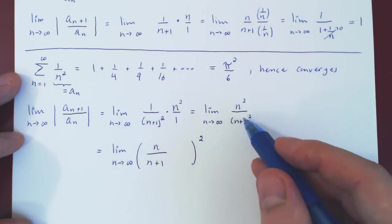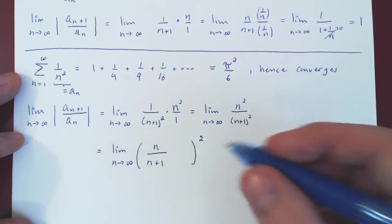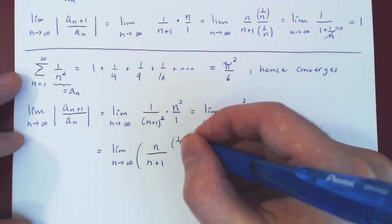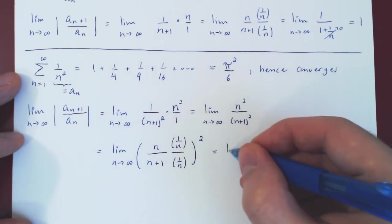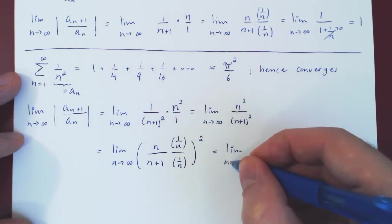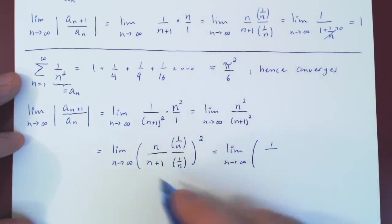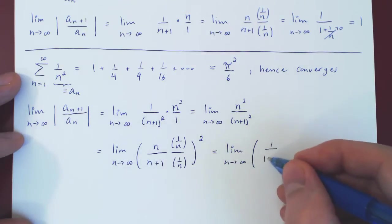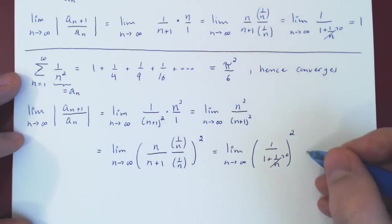And if you look inside of the square, you have n over n+1. So multiply top and bottom by 1 over n, and you will now obtain a rather simple limit. You'll have 1 over 1 plus 1 over n, all squared. As n tends to infinity, only 1 over n shrinks to 0, so you're left with 1 over 1 squared, which is simply 1.